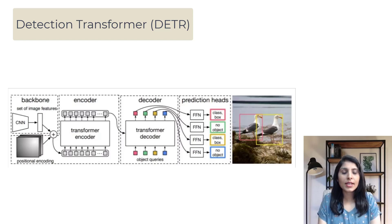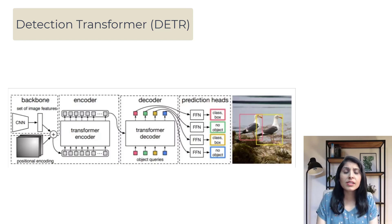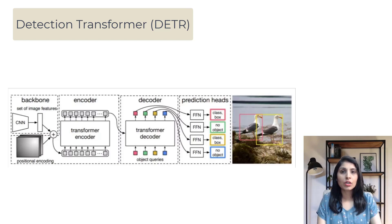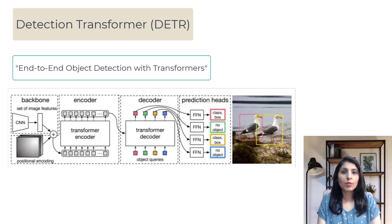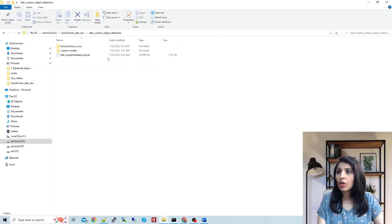Hello everyone, my name is Arohi and welcome to my channel. In today's video I will show you how to work with the Detection Transformer, also known as DETR. It is an object detection model that uses a transformer architecture. The DETR model was introduced in the research paper titled 'End-to-End Object Detection with Transformers,' published by Facebook AI Research in 2020. Today we will see how to perform object detection on a custom dataset using this DETR model.